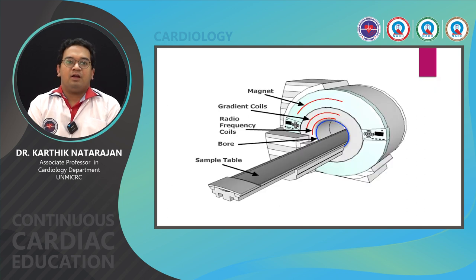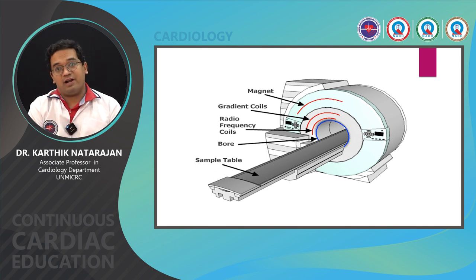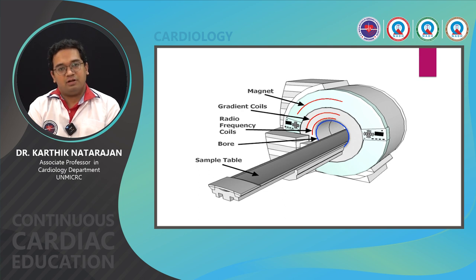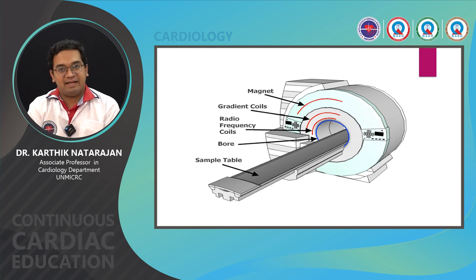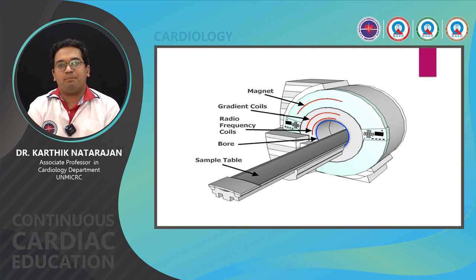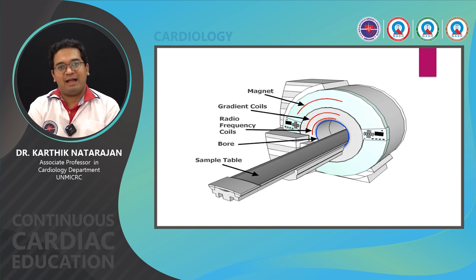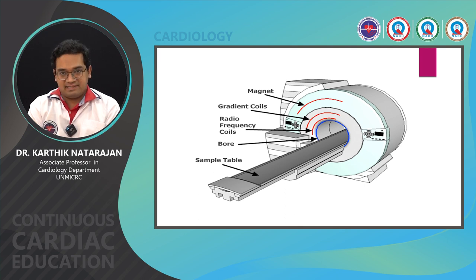This is the basic model of a cardiac MRI. Most of you would have undergone an MRI at some point. This is the sample table on which the patient lies — the foot goes in first and the head goes into the gantry or large bore. The magnet marked here is the primary magnet. This magnet remains on at all times — even if you switch off the power, because it is a superconductor containing liquefied helium designed to provide the magnetic field at all times. The strength of the magnet is generally 1.5 tesla or 3 tesla.